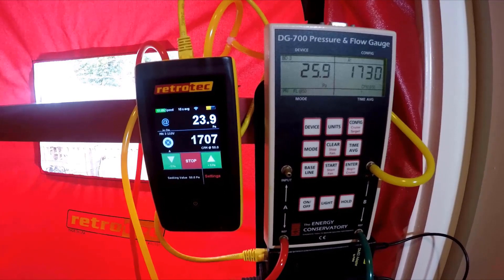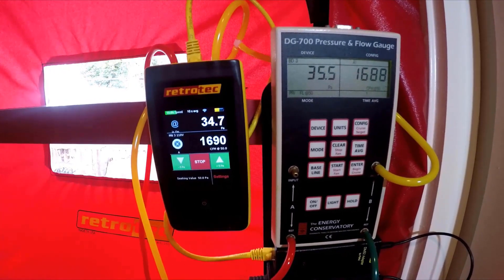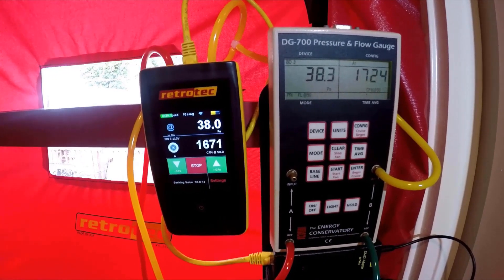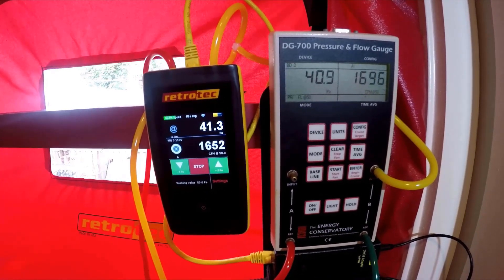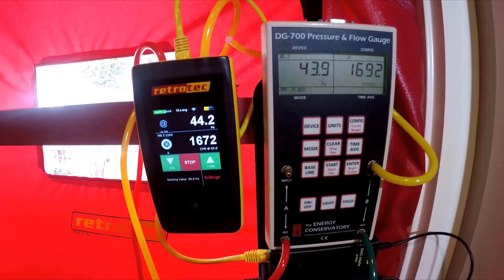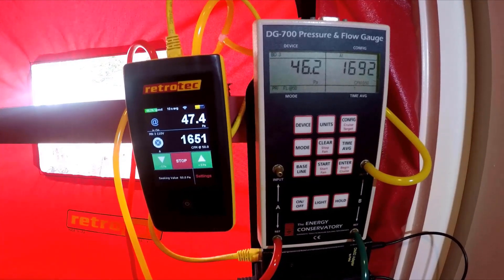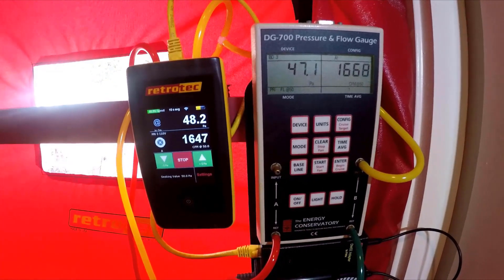So as we're ramping up our pressure we can see that these numbers are starting to align a lot better than they were last time. It's not perfect. The gauges will vary a little bit. Plus this DG700 is a little bit past its calibration date but working well enough to show how important it is to add this tube on to this port on this gauge when you're pressurizing a building.